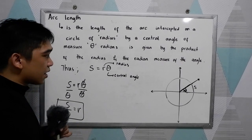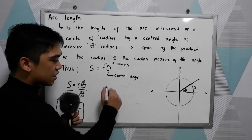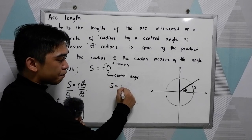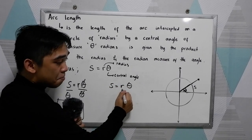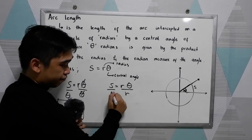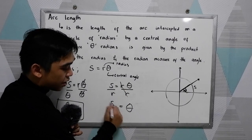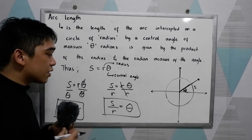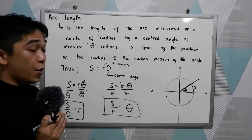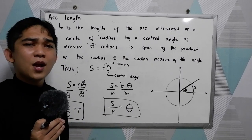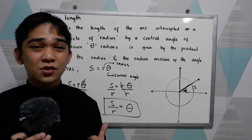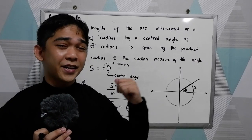The second one is if the central angle is missing, the same step, divide by radius. So central angle is equal to S over R. This will be the two formulas that you're going to use. Now let us try some application. Let's try to solve some word problems regarding this template.